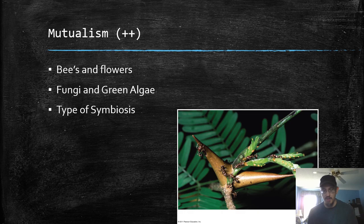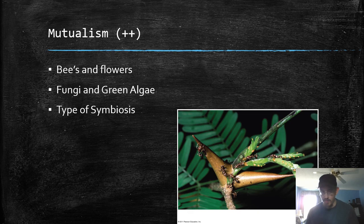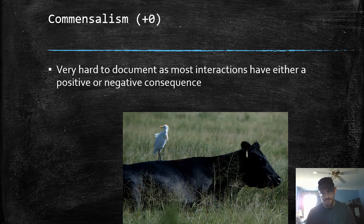Bees pollinating flowers might be thought of this way — the flower gets pollinated, its sperm carried off, and the bee gets something to eat. Fungi and green algae living together in a lichen — that is mutualism. Here we have ants living on an acacia tree. The ants defend the tree, and in return they get food and shelter inside of those hollow thorns. They both benefit. This is a type of symbiosis.